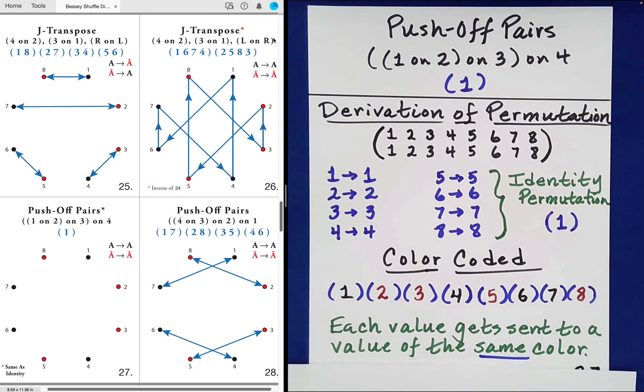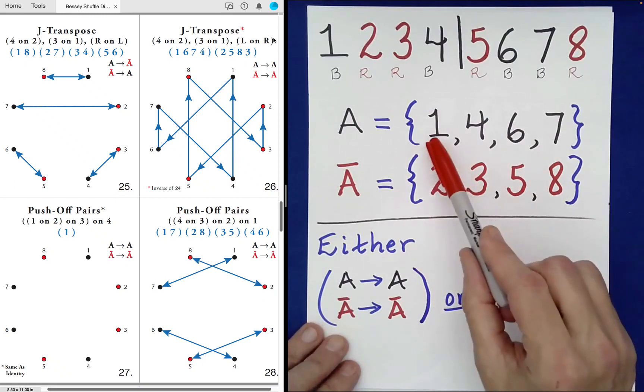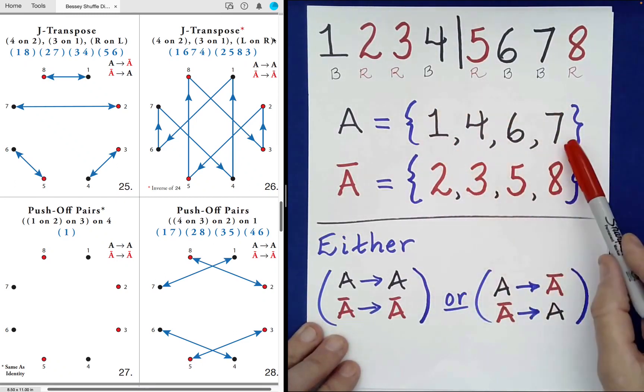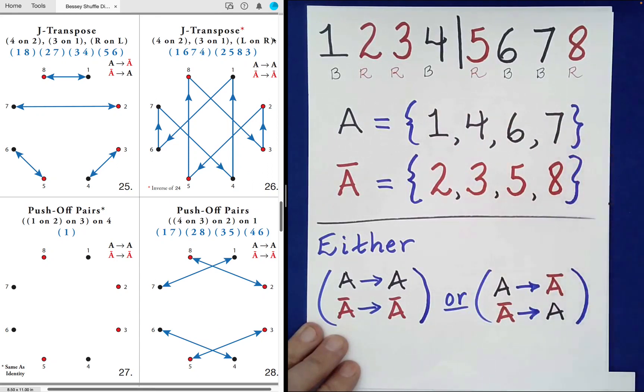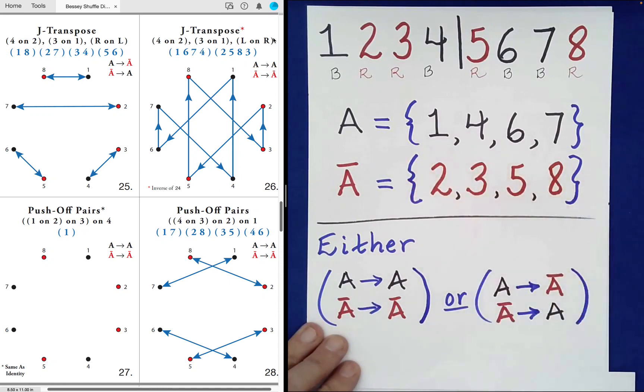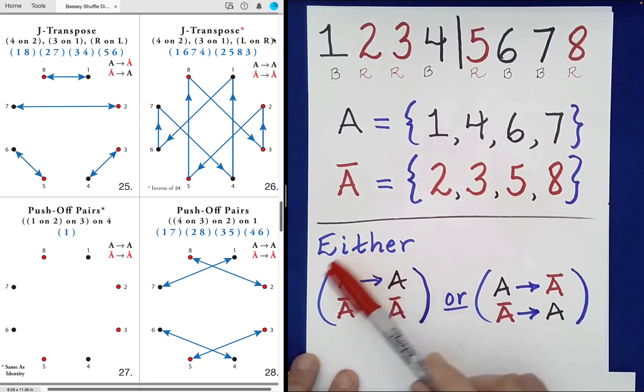So in particular, inversion does not occur here. All of the cards that began in positions one, four, six, seven, end up in those positions. In fact, they end up in their original positions. And all of the cards in positions two, three, five, eight, also are returned to this set of position values. So we would be looking at this situation here.